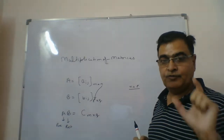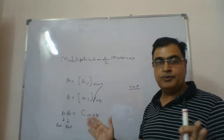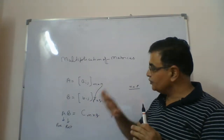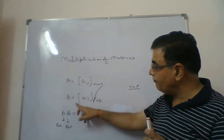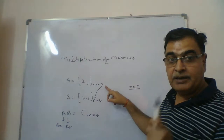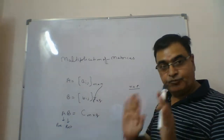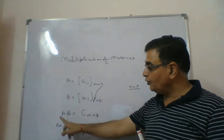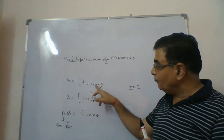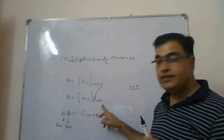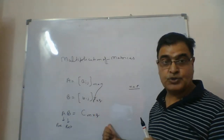This is a very important condition. You will find some problems with multiplication, but if you understand it carefully it will be very easy. A and B can multiply only when the number of columns in the pre-multiplier equals the number of rows in the post-multiplier. And the new matrix you get will take rows from the pre-multiplier and columns from the post-multiplier.